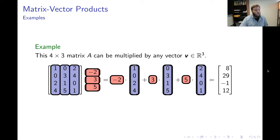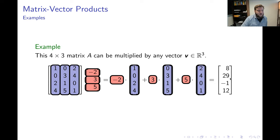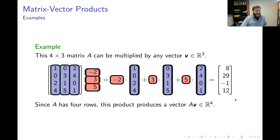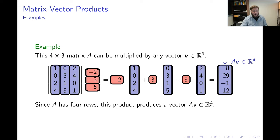When I do all the arithmetic, I produce a vector with 4 coordinates — since 4 is the number of rows of my matrix. If I did my arithmetic right, those 4 coordinates are 8, 29, negative 1, 12. So A times V is a vector in R4. This is our first example of a matrix vector product.